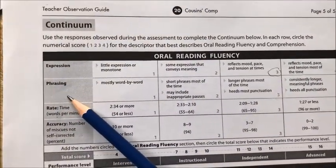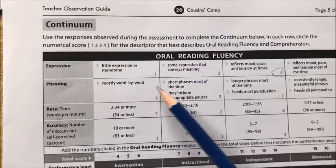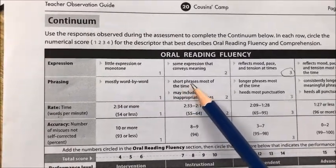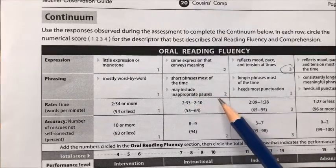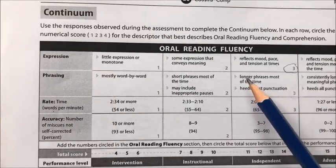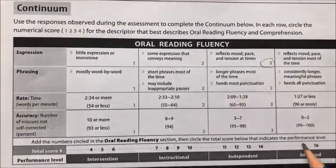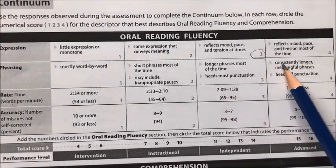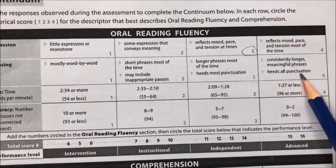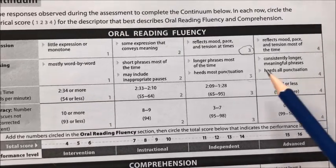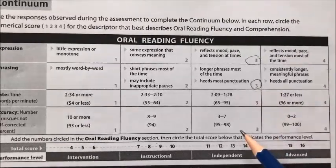Moving on to phrasing: the intervention level describes this as mostly word by word. Instructional is short phrases most of the time and may include inappropriate pauses. Independent is longer phrases most of the time, heeds most punctuation. And the advanced descriptor is consistently longer, meaningful phrases that heed all punctuation. Our read would indicate that this student is also at the independent level.